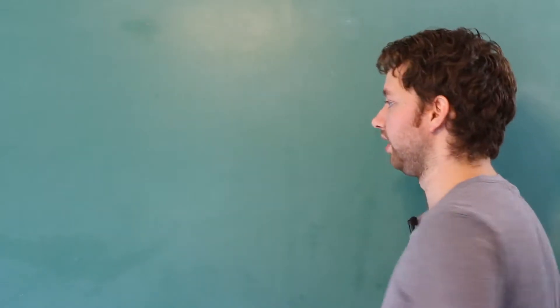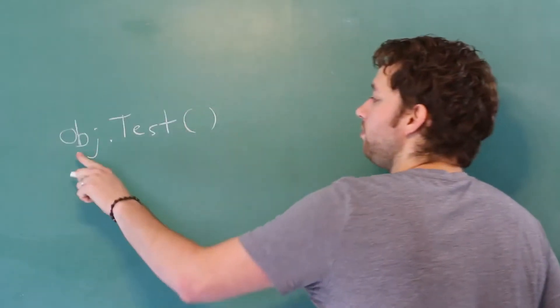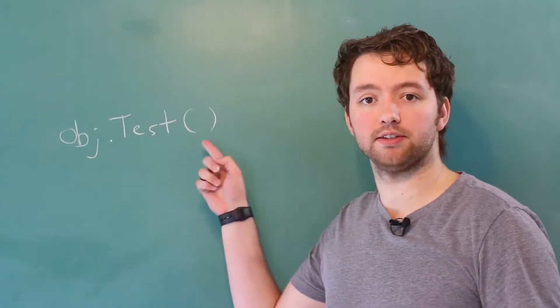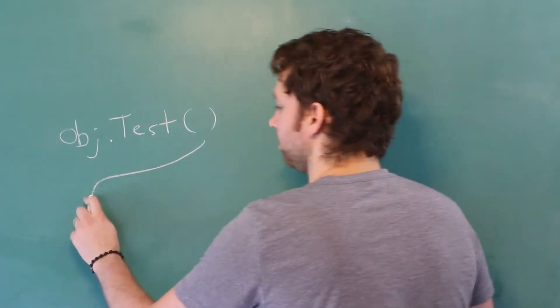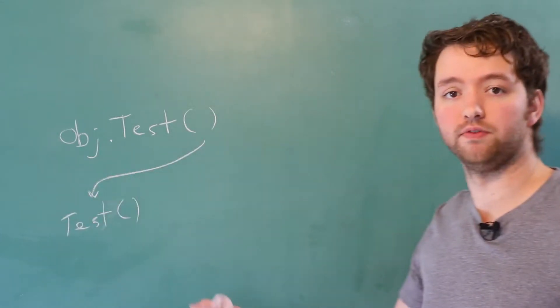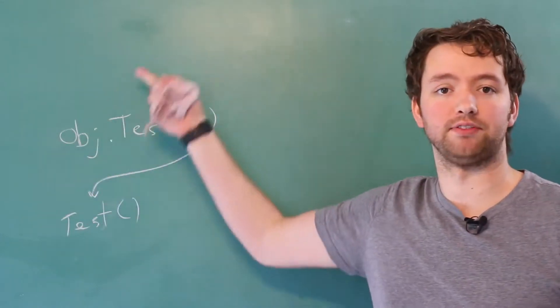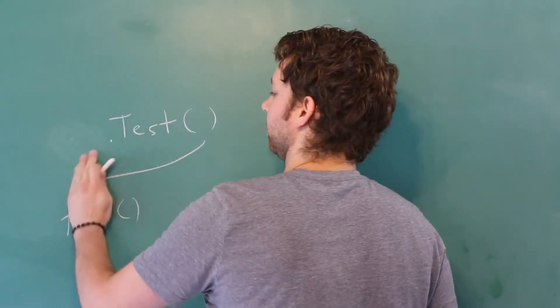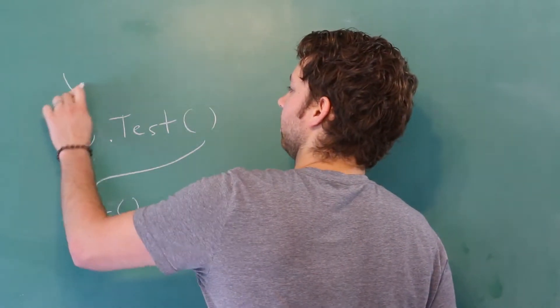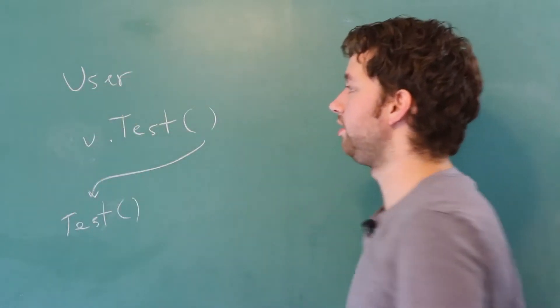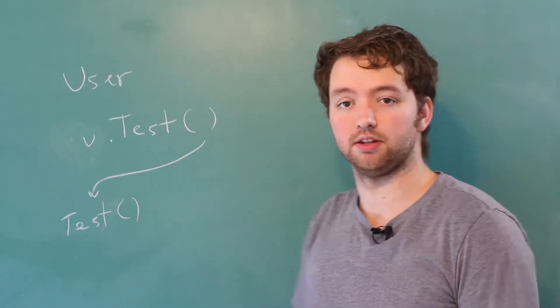For example, let's say we have some object and we call a method test. This is going to go to some method test and it's going to invoke it. It's going to be in whatever class this is. Let's say this is a user. Maybe we can call it u and it comes from the user class. Inside a user, we're going to define that test method.